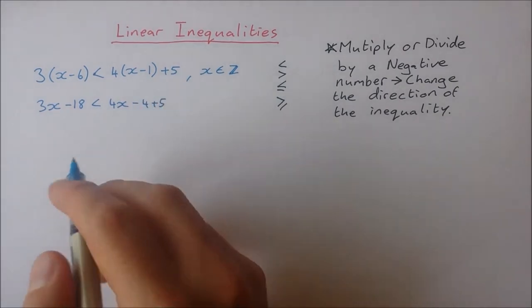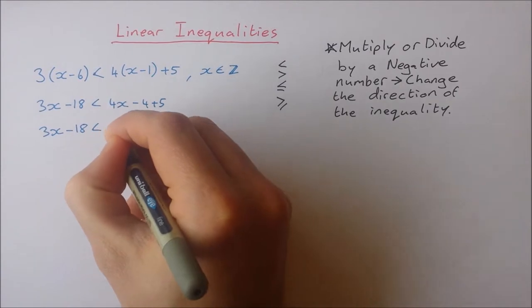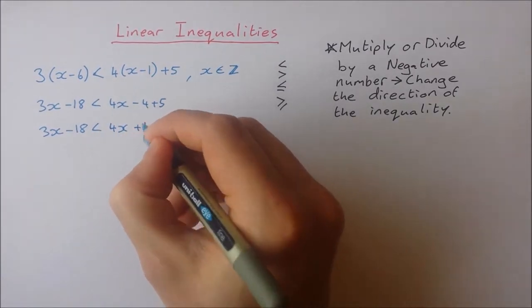Okay, I'm going to tidy the two of these up here. I get 3x minus 18 is less than 4x minus 4 plus 5 is plus 1.